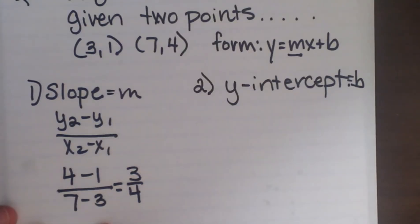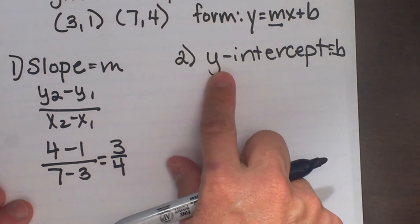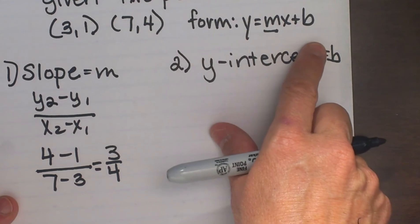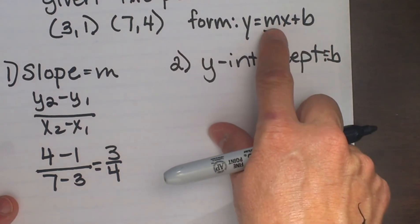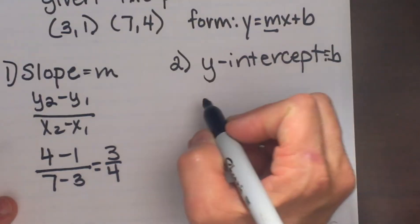So that gives me a slope of 3/4. That is the first step, to find the slope. Now let's find the intercept. There are two ways to do this. The first way I'm going to show you is just using the form y = mx + b and using the slope we just found and then one point to solve for b.